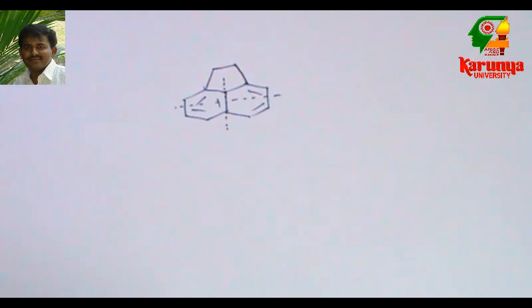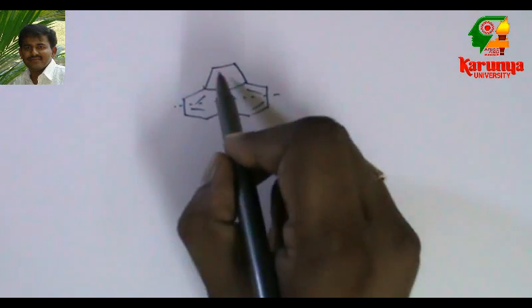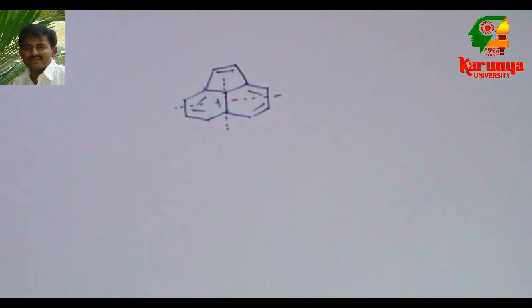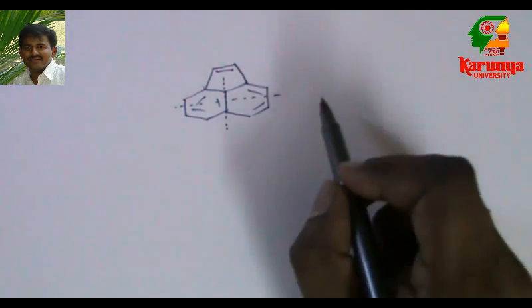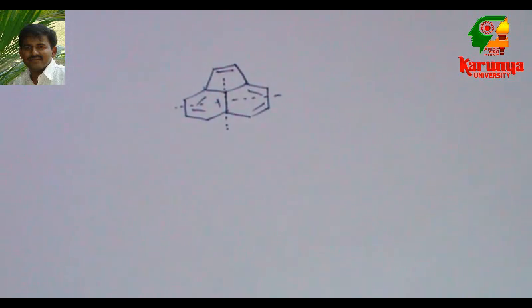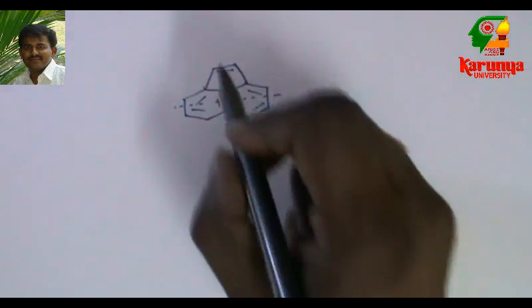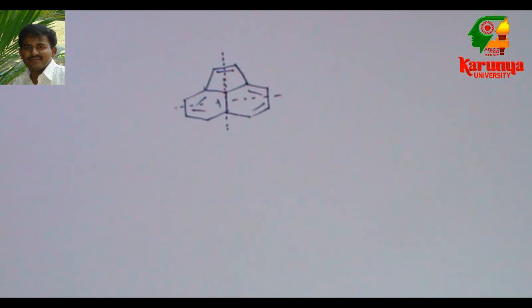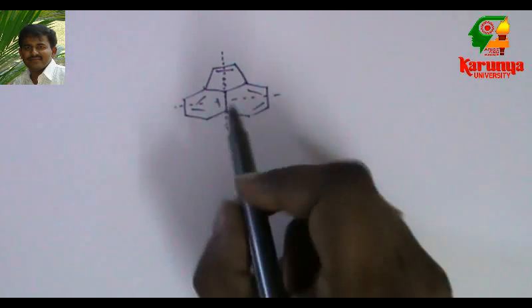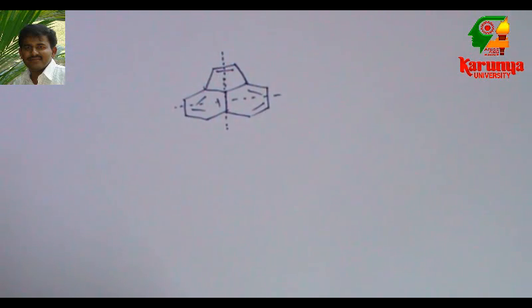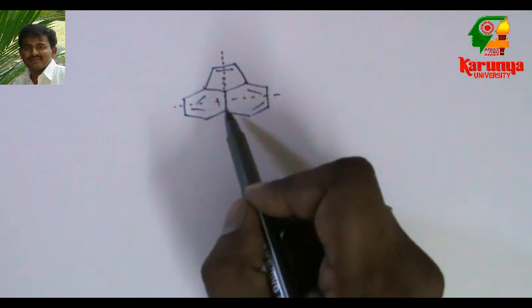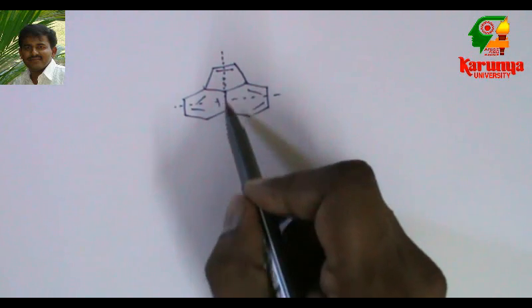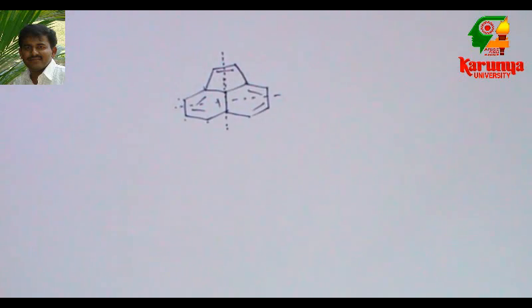I modify this little bit. I go for a compound like this. Then what will be the number of signals? In that case there is only one plane of symmetry. So the number of signals will be one, two, three, four, five, six, seven. It will give seven signals.